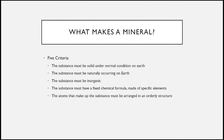So those are the five criteria that must be met by a substance to become a mineral: the substance must be solid under normal conditions on earth; the substance must be naturally occurring on earth; the substance must be inorganic; the substance must have a fixed chemical formula made of specific elements; and the atoms that make up the substance must be arranged in an orderly structure.